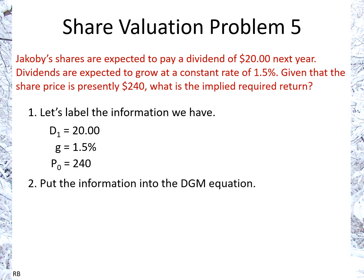Now we put it into the Dividend Growth Model equation: P0 = D1 over (R minus G). Putting in the numbers: 240 is P0, D1 is 20, we don't know R — we're solving for it — and G is 1.5%.